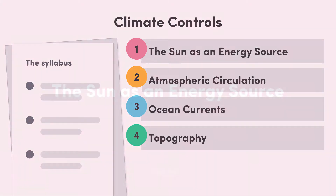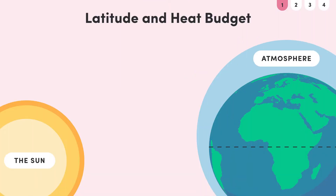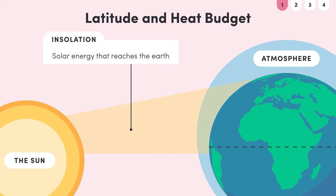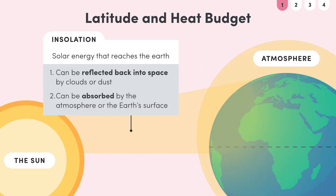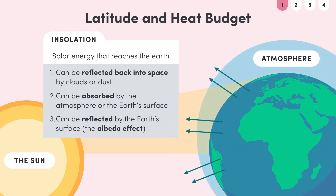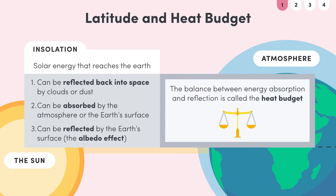Let's start by considering the driving force behind all of these climate processes: the sun. Solar energy that reaches the earth is called insolation. Once solar radiation reaches the earth, it can either be reflected back into space by clouds or dust, or it can be absorbed by the atmosphere or the surface of the earth. Insolation can also be reflected by the surface of the earth, which is called the albedo effect. The balance between absorption and reflection of solar energy is called the heat budget of the earth.